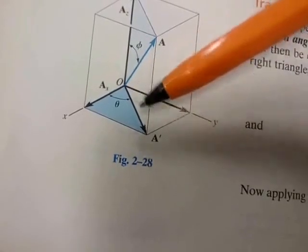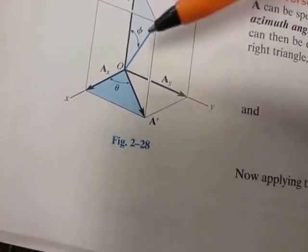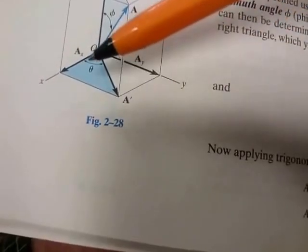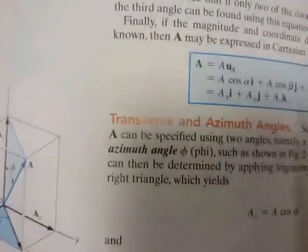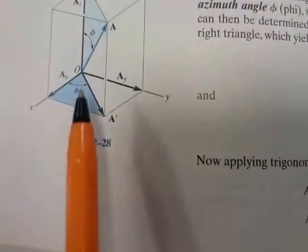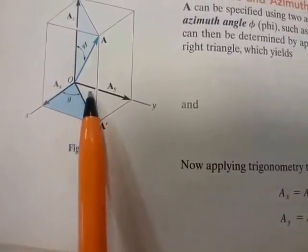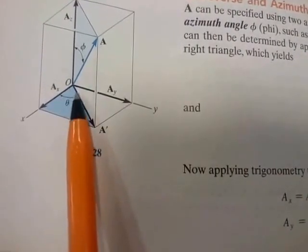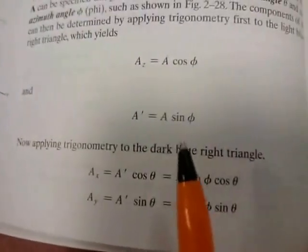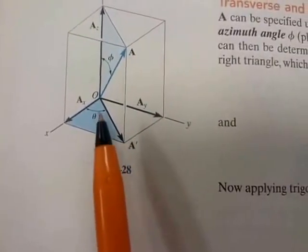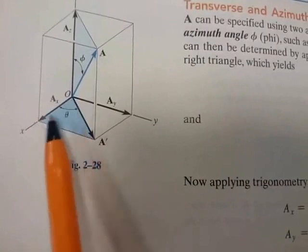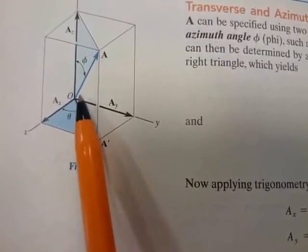We're still not there yet — all we've done is project onto the x-y plane. Now we are in the x-y plane, and if we have the transverse angle theta, we are able to obtain x and y components. A-dashed times cos(theta) gives Ax, and A-dashed times sin(theta) gives Ay.